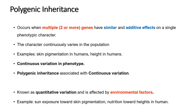Polygenic inheritance occurs when multiple genes — two or more — have similar and additive effects on a single phenotypic character. The character continuously varies in the population, as seen in examples like skin pigmentation and height in humans. This is referred to as continuous variation in phenotype. Polygenic inheritance is associated with continuous variation, which is also affected by environmental factors such as sun exposure on skin pigmentation and nutrition on height.